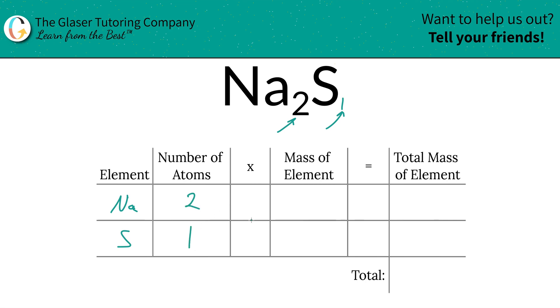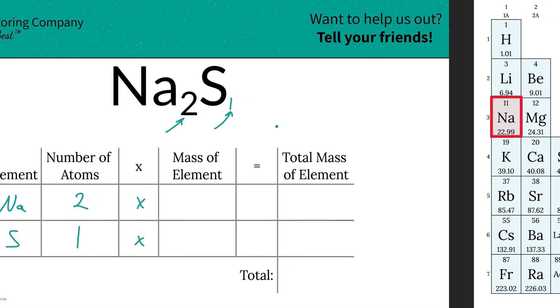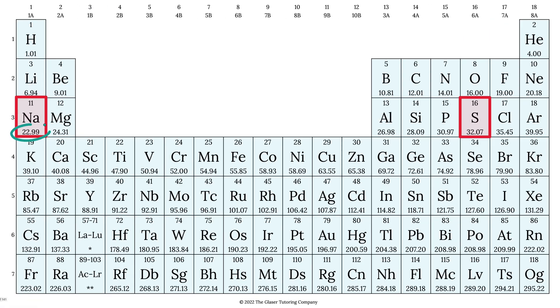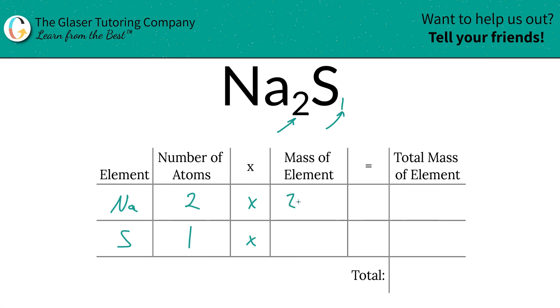We're going to take those number of atoms and multiply by the mass of each particular element. We need the periodic table for that. So sodium is 22.99, sulfur is 32.07. So that's what we're going to write down. 22.99 for sodium, 32.07 for sulfur.